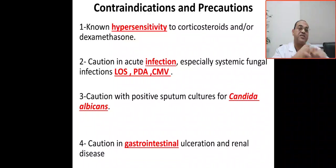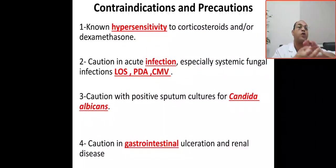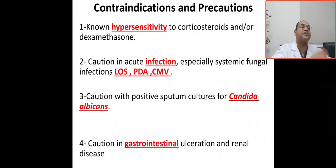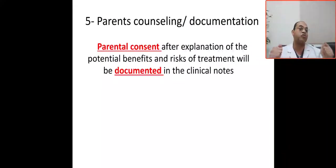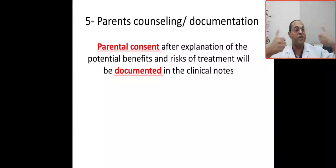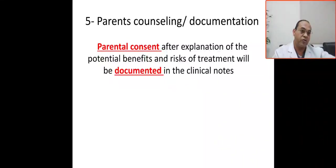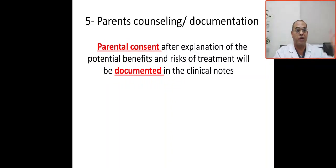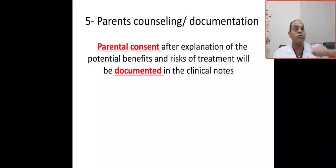You have to be sure there is no hypersensitivity, clear all infections, no congenital infection, no candidal infections, and PDA is treated. Also be sure there is no GI bleeding, ulceration, or renal disease. Most importantly: parent counseling and documentation. Before starting Dexamethasone, you must obtain parent consent after explanation of the potential benefits and risks of the treatment, documented in the clinical notes. Discuss with the parent the benefit of Dexamethasone, the adverse effects, and the long-term neurodevelopmental outcome — this might lead to cerebral palsy. Document everything you said and did with the parent regarding counseling about Dexamethasone.